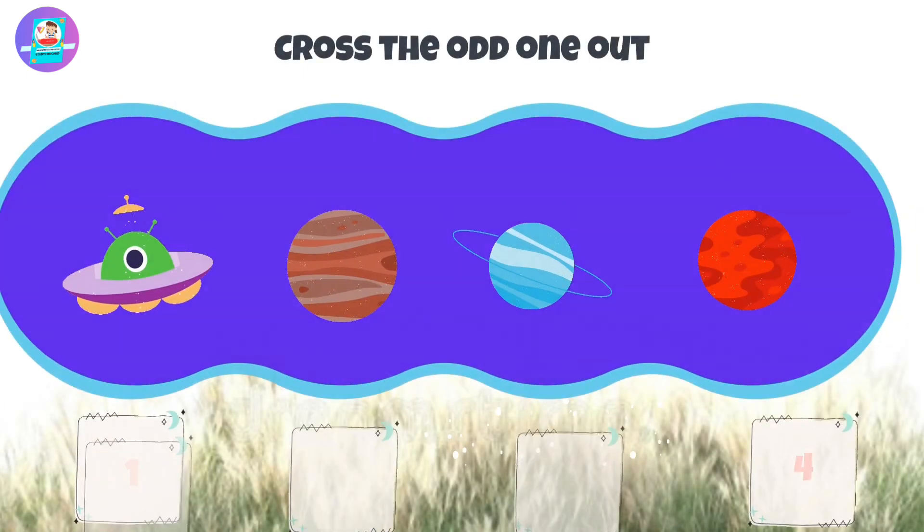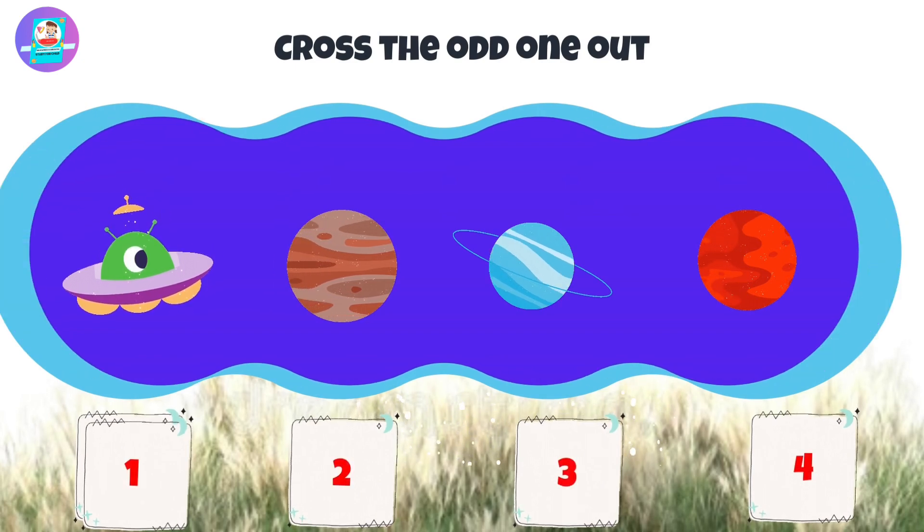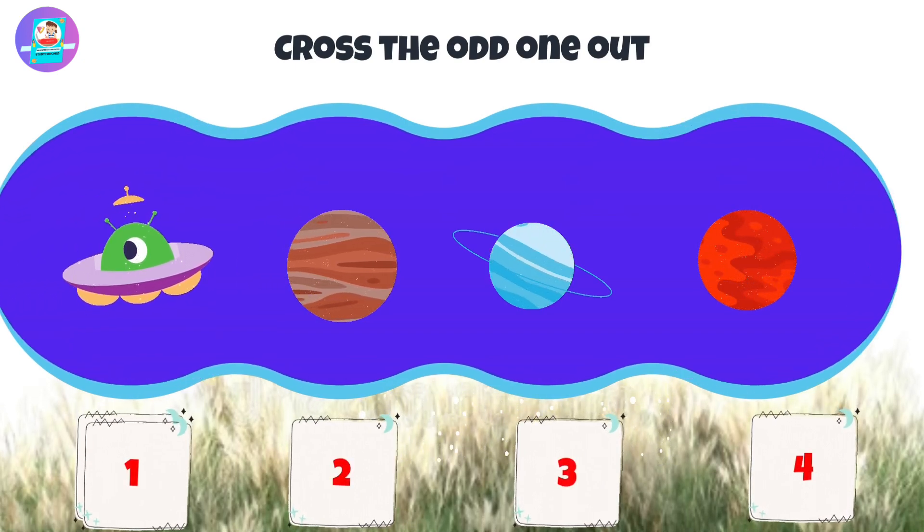Okay, next, there are 4 pictures: 1, 2, 3, 4. Put the odd one out.